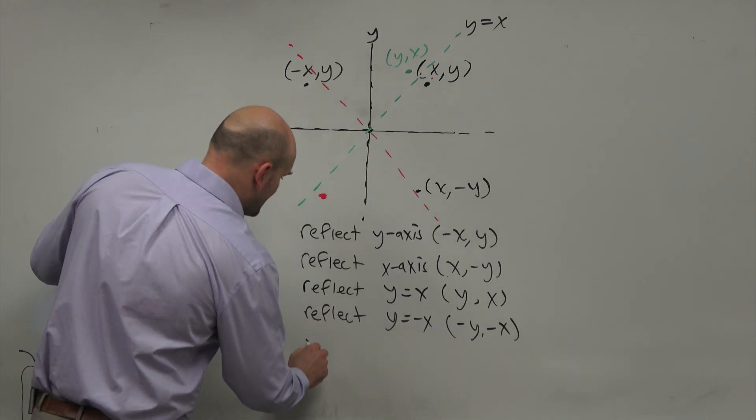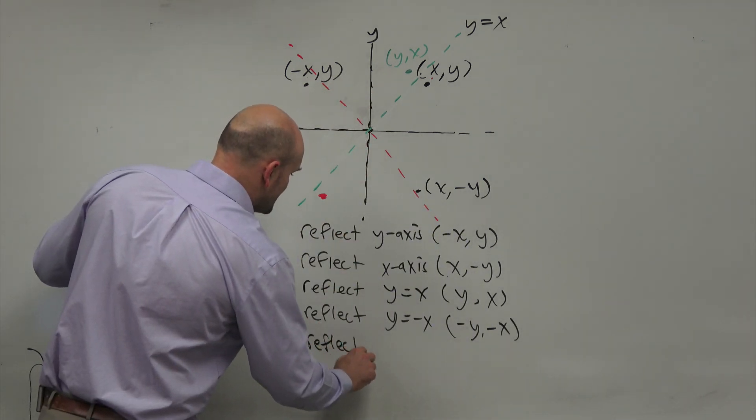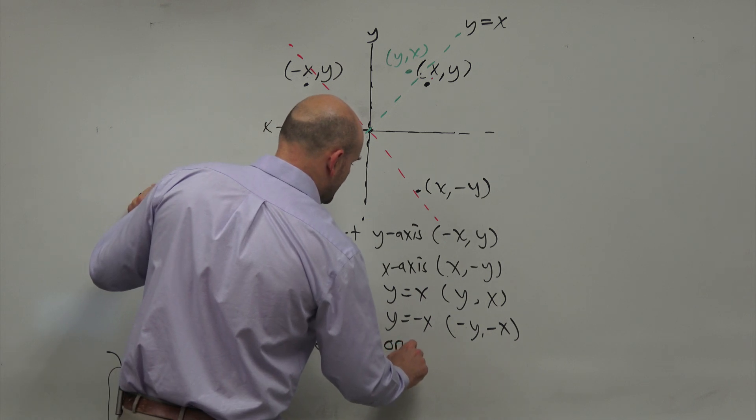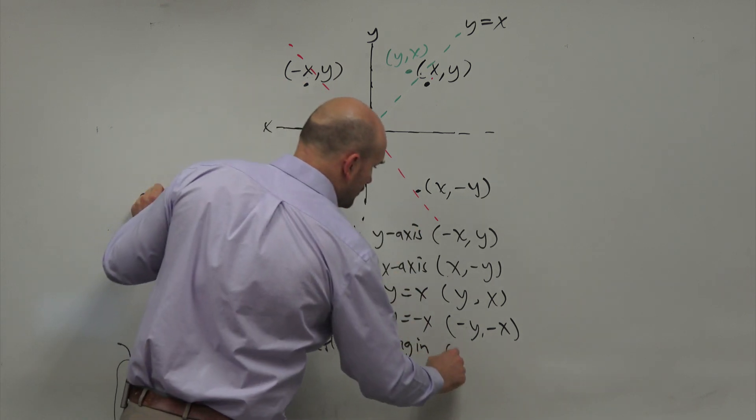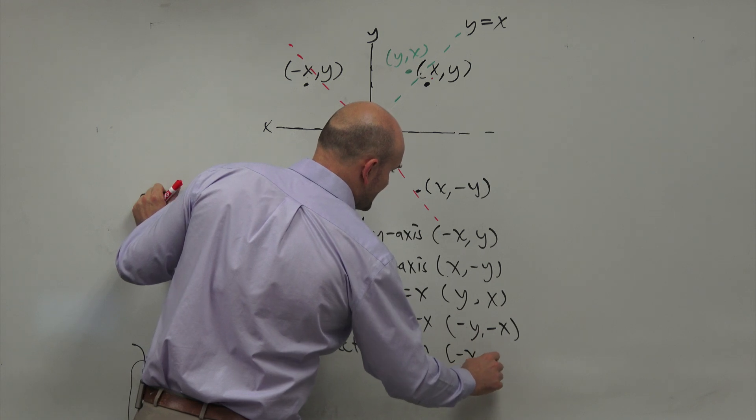So the last symmetry that we need to do is going to be reflect the origin, which right here, which is just going to be negate my X and negate my Y.